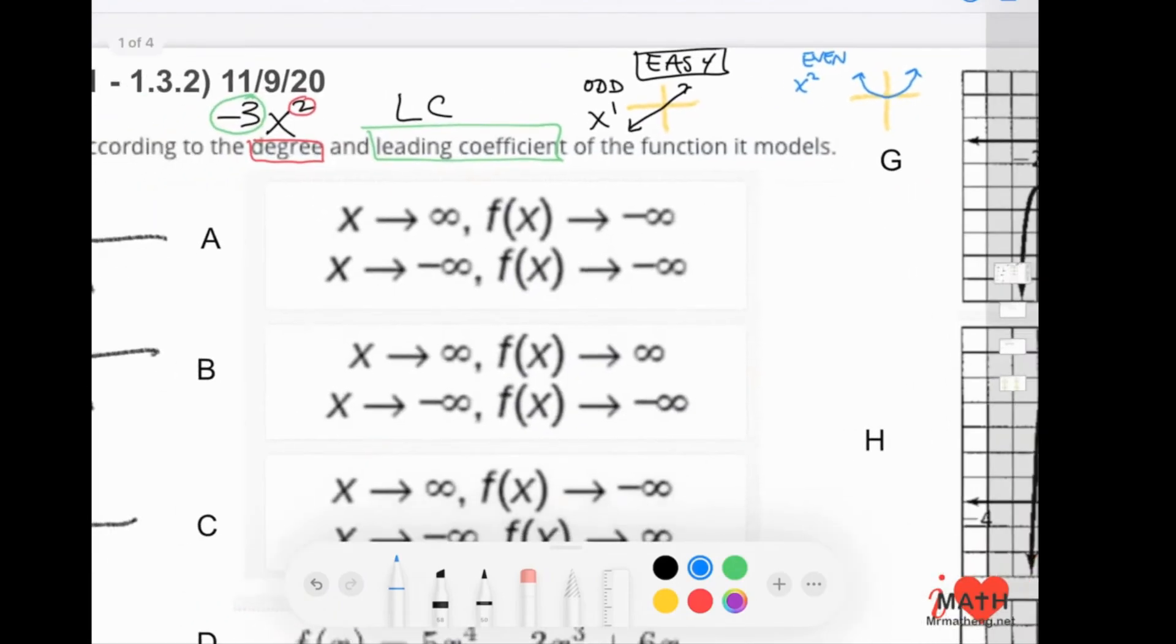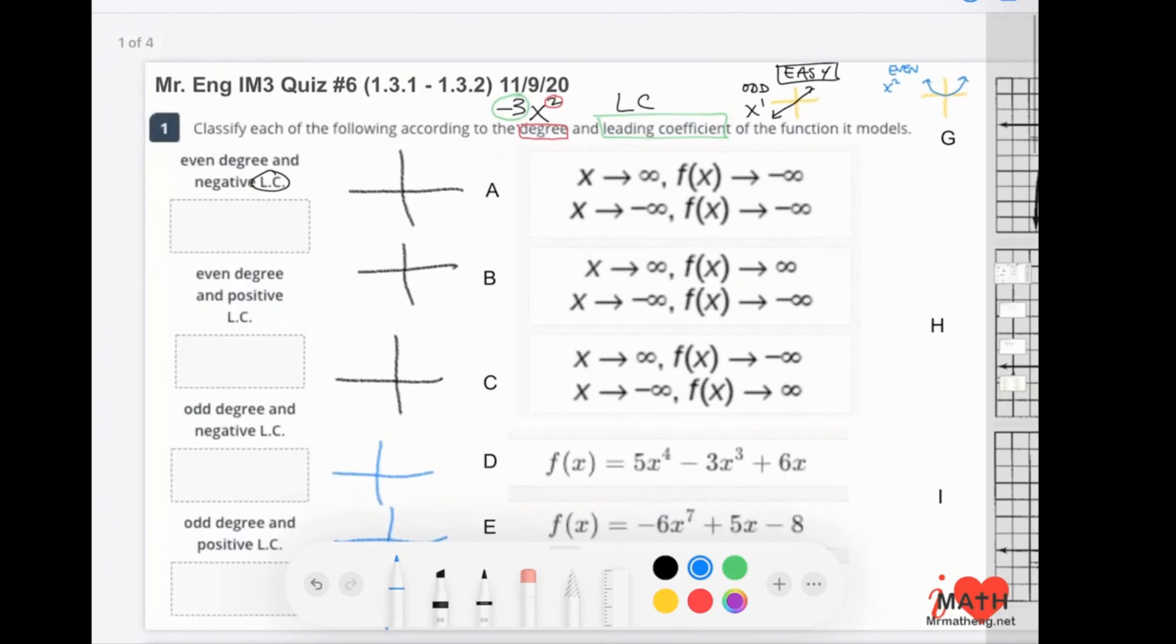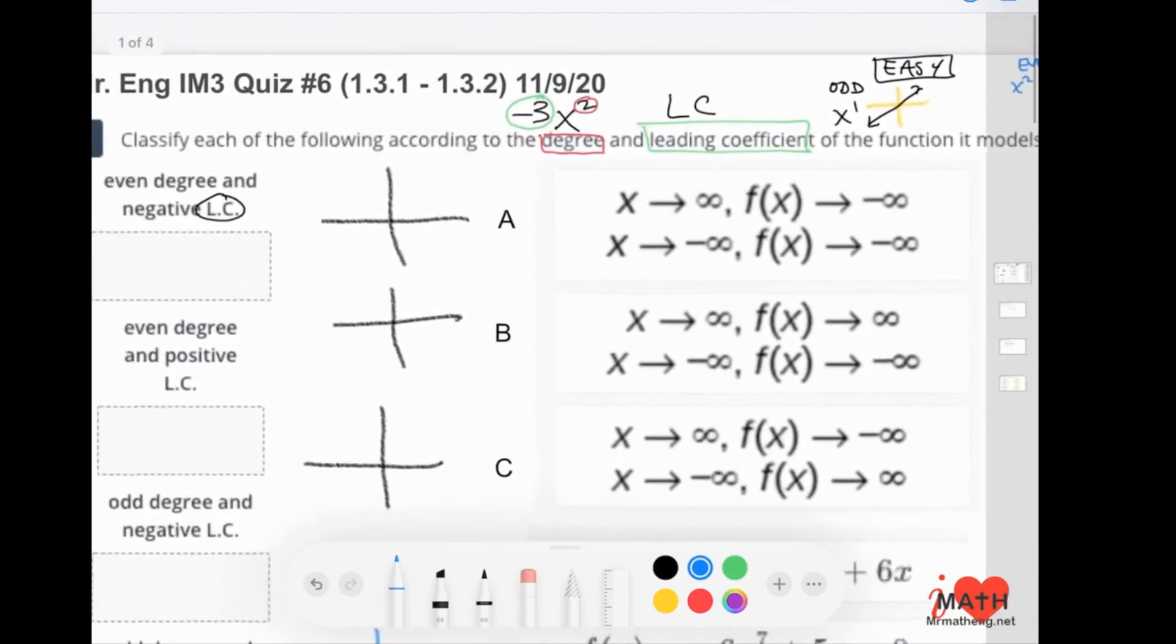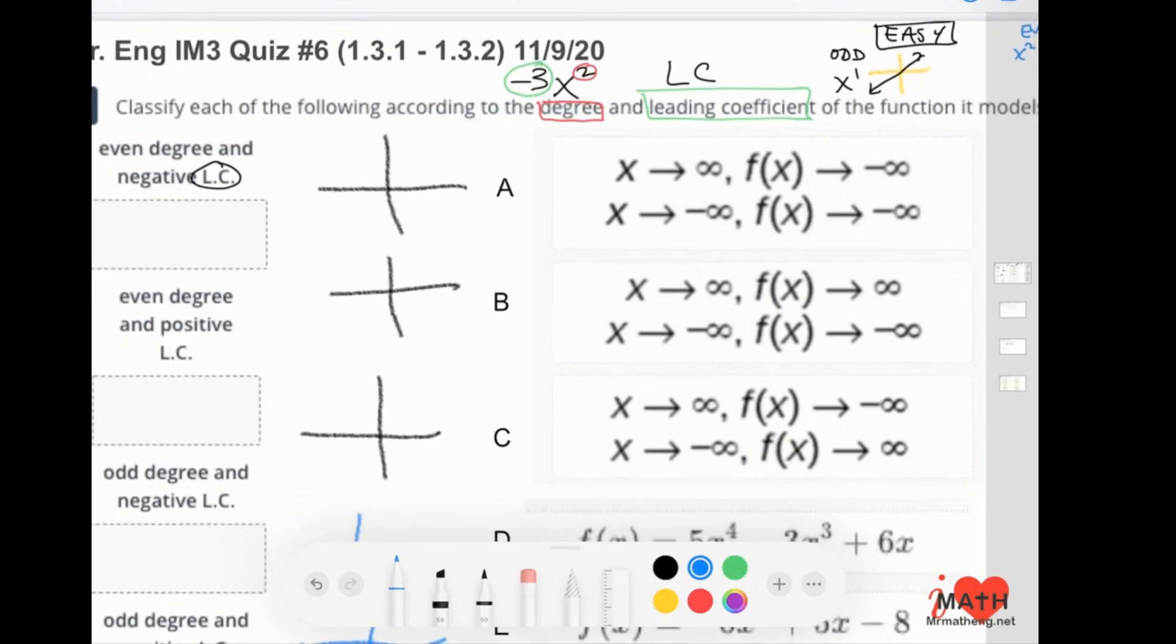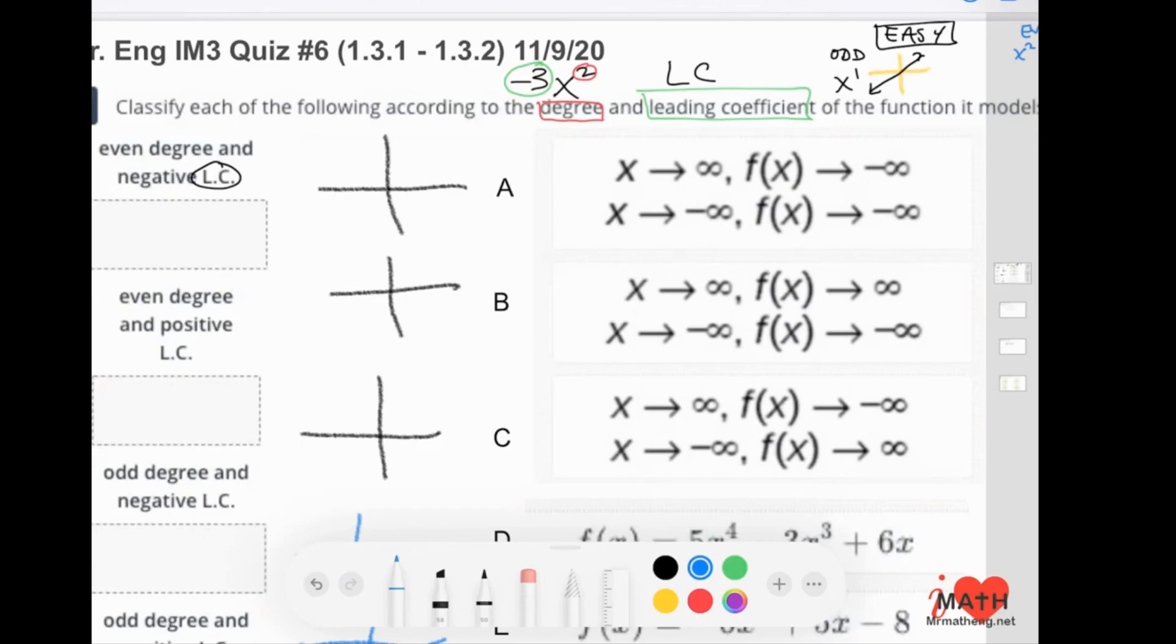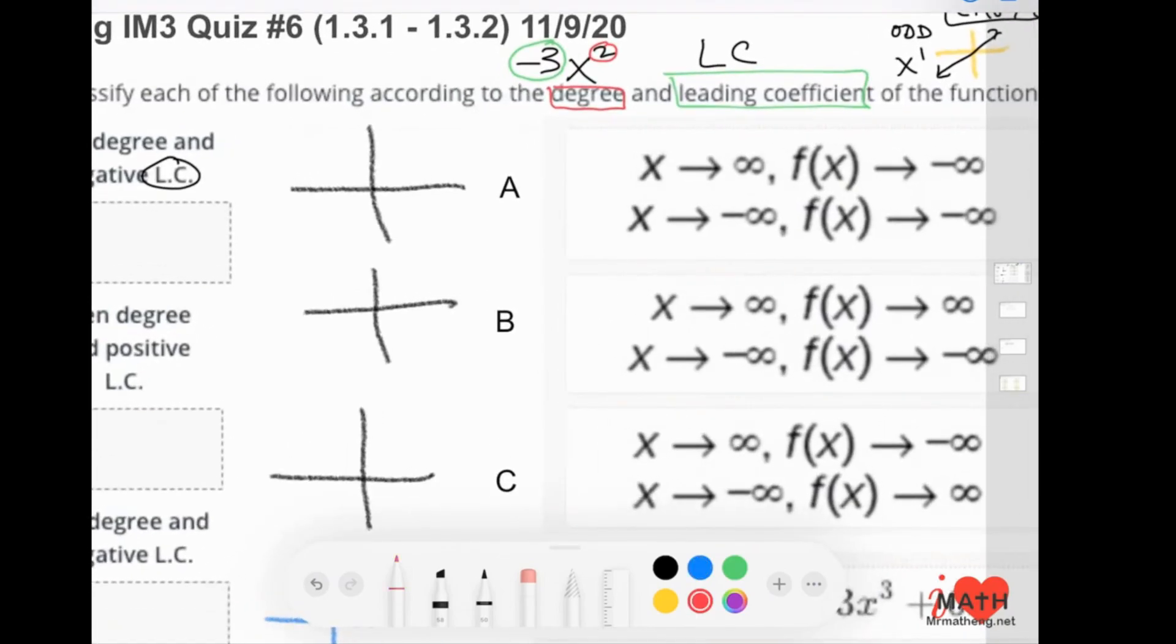I'm going to keep referring to the easiest ones that we know, and you guys were supposed to drag and drop. The first three here in red are called end behaviors. It tells us a sentence, and in this sentence, this is the x-axis, and this is positive infinity, and this is negative infinity. Let me try to draw these for you.